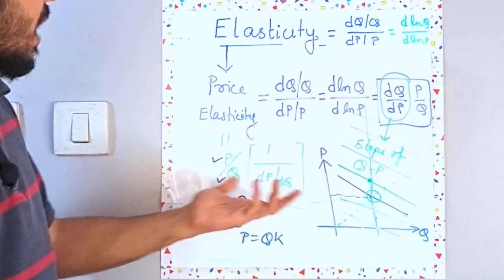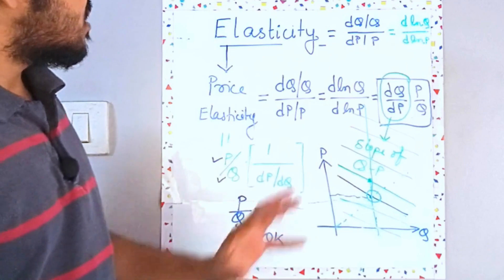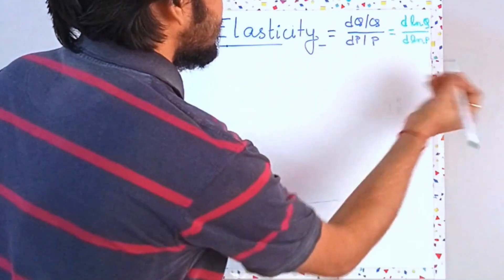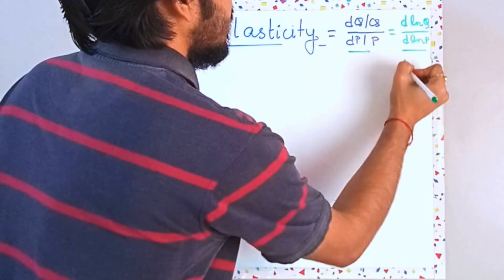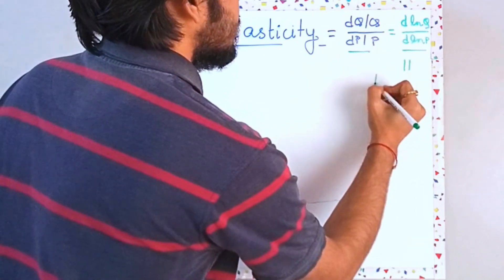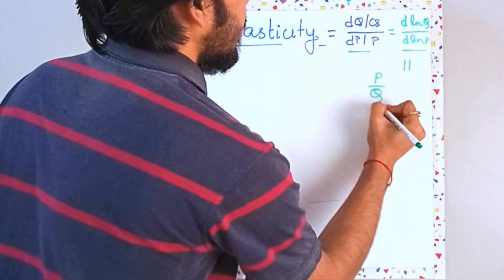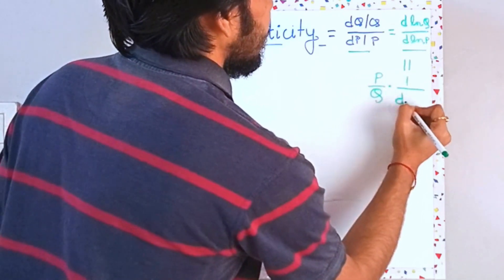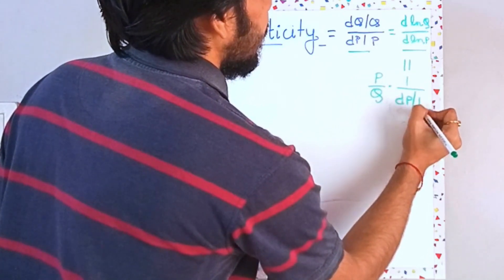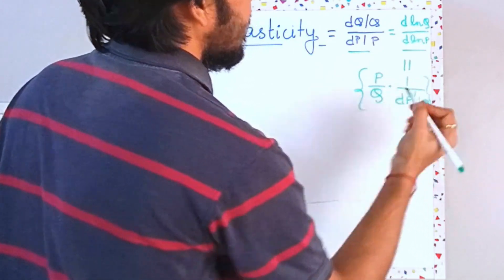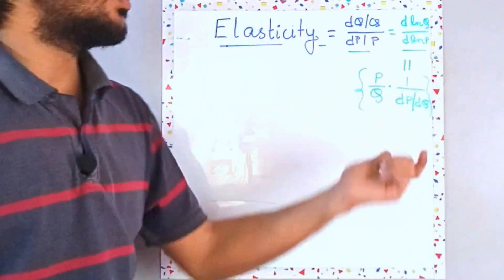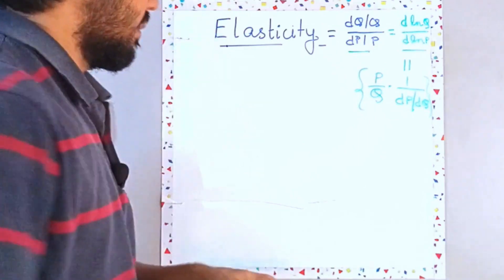Now, what about the range of values of price elasticity? Let's try look at that. So let's just summarize this. This is one formula, second formula, and the third formula is P by Q into 1 by DP upon DQ, right? Now, this is the more versatile formula, which you could use for your intuitive understanding.